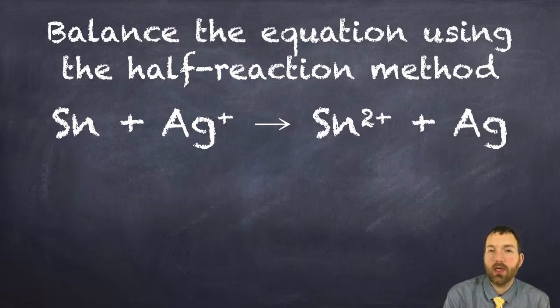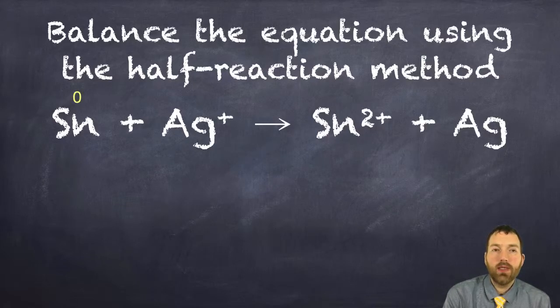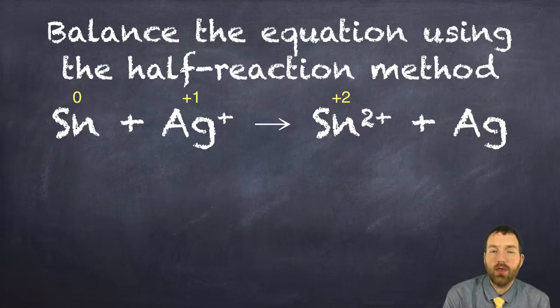We're just exchanging some electrons in a very simple oxidation reduction reaction. So tin gets a zero, silver gets a plus one charge, the tin two ion gets a plus two oxidation number, and the silver atom gets a zero because it's uncombined.